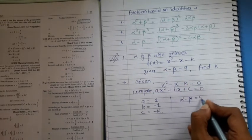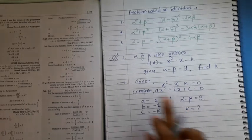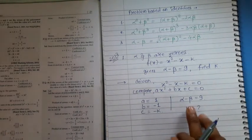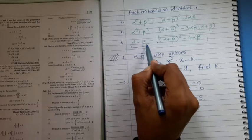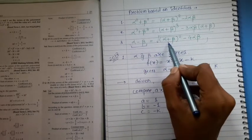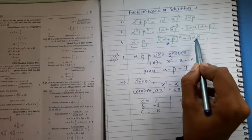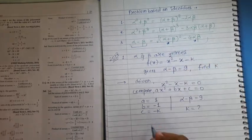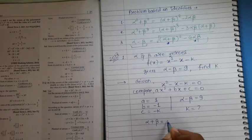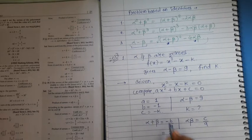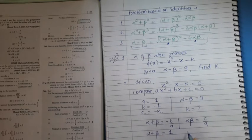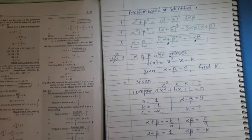Comparing x² minus x minus k with ax² plus bx plus c, we get a equals 1, b equals minus 1, c equals minus k. Given alpha minus beta equals 9. Now alpha plus beta equals minus b by a equals minus(minus 1) equals 1, and alpha times beta equals c by a equals minus k.